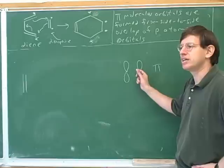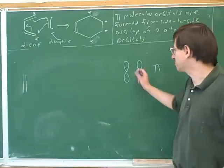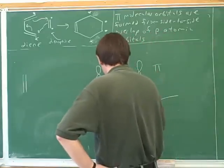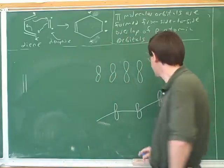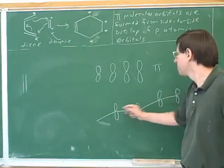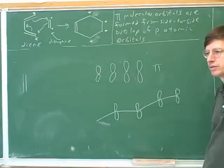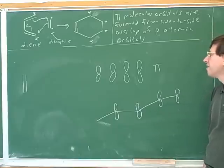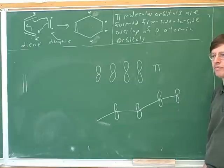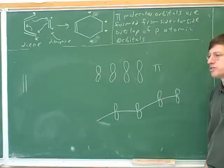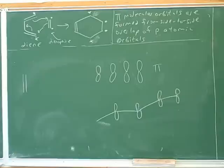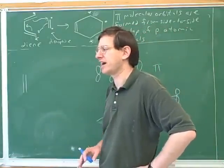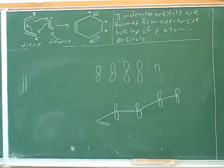The interesting thing about side-to-side p orbitals is that you can get more than two of them lined up — two, three, or four side-to-side overlaps. When we have three or more side-to-side overlapping p orbitals, that's called conjugation — a conjugated system. A lot of instructors say conjugation means alternating single and double bonds, but that's only one type. In general, conjugation means three or more side-to-side overlapping p orbitals.